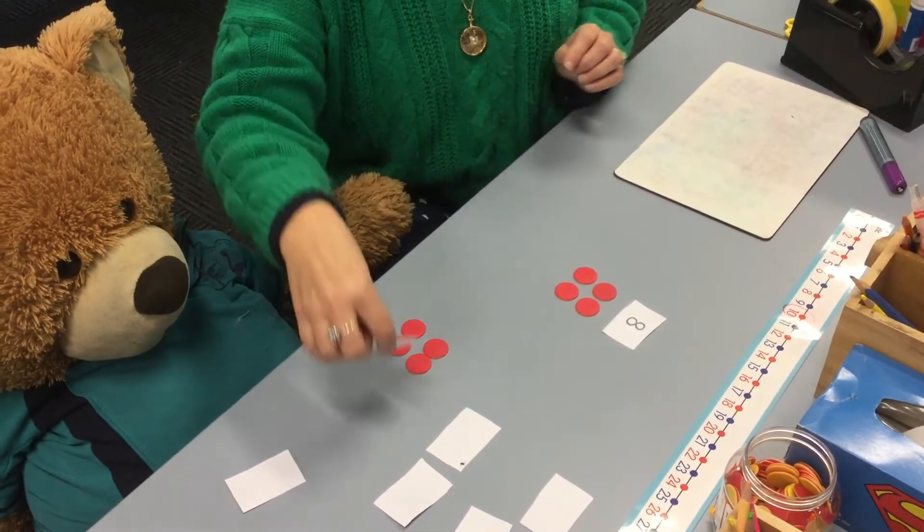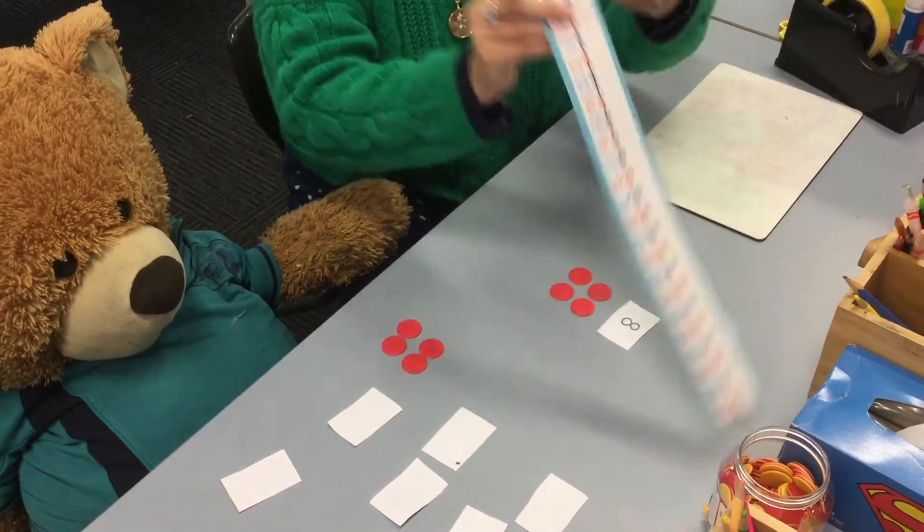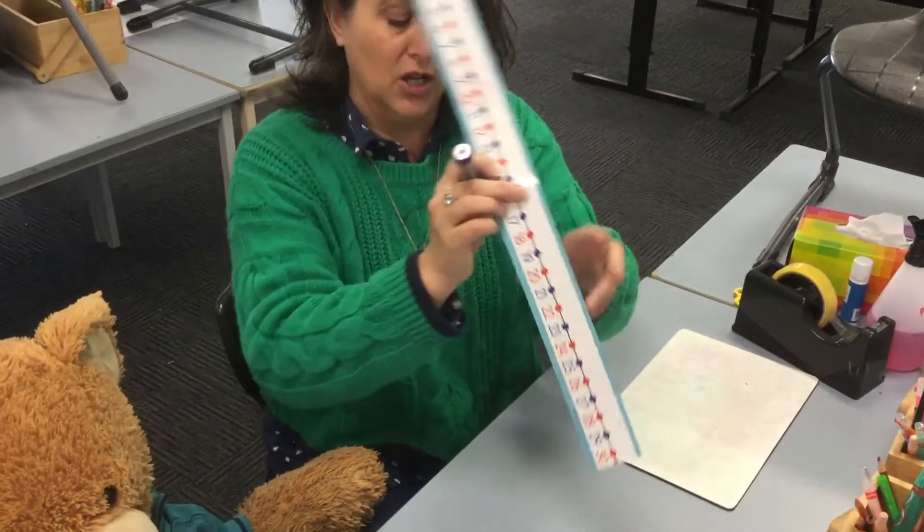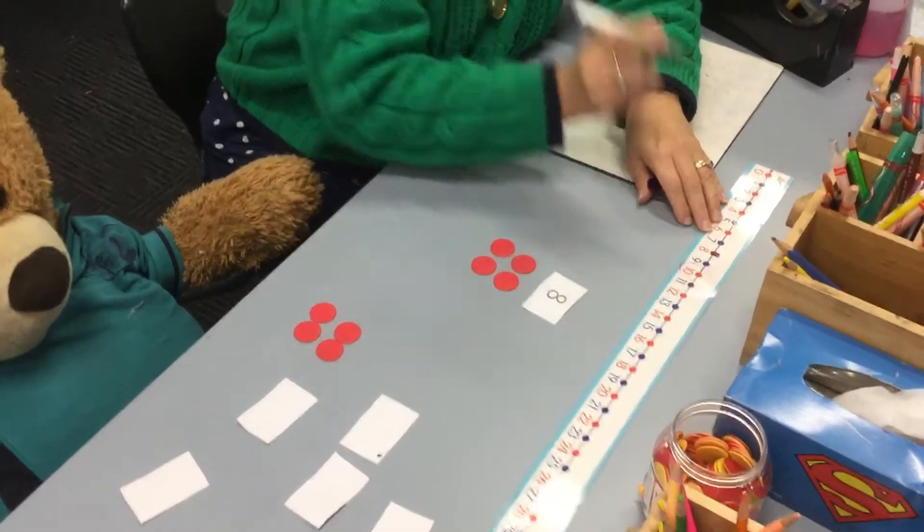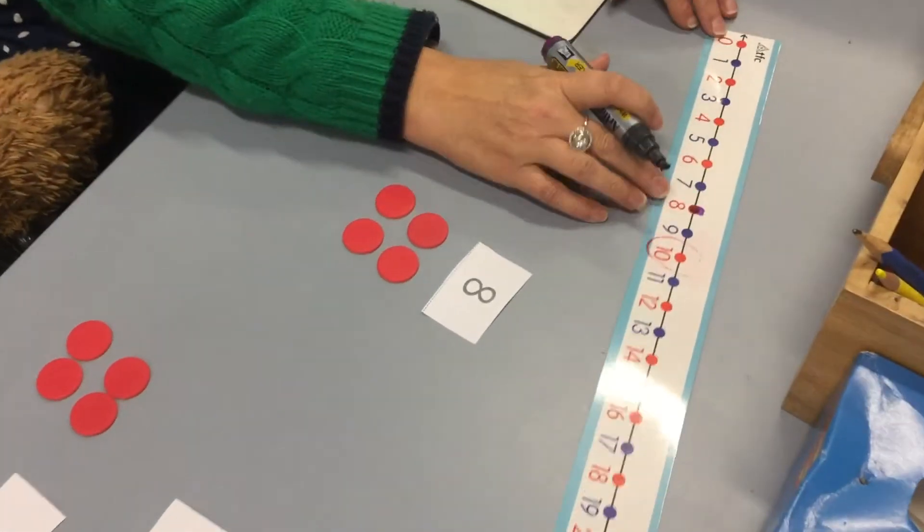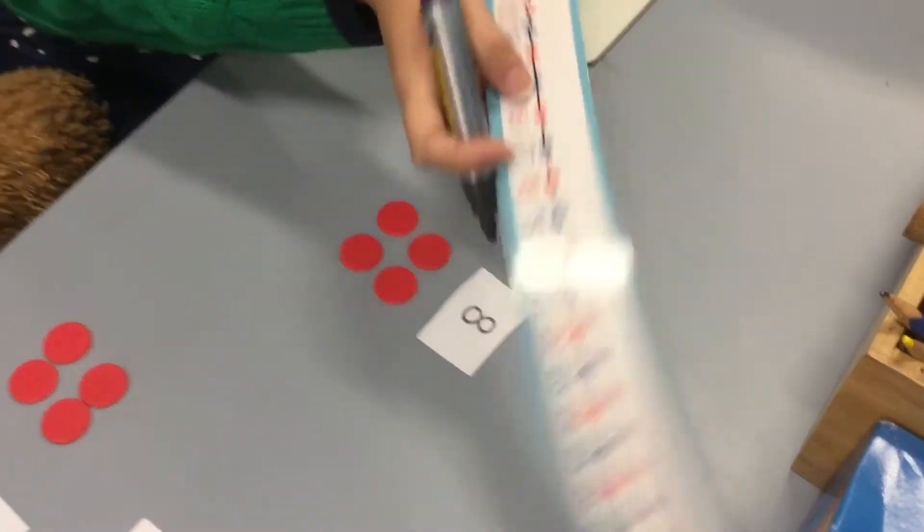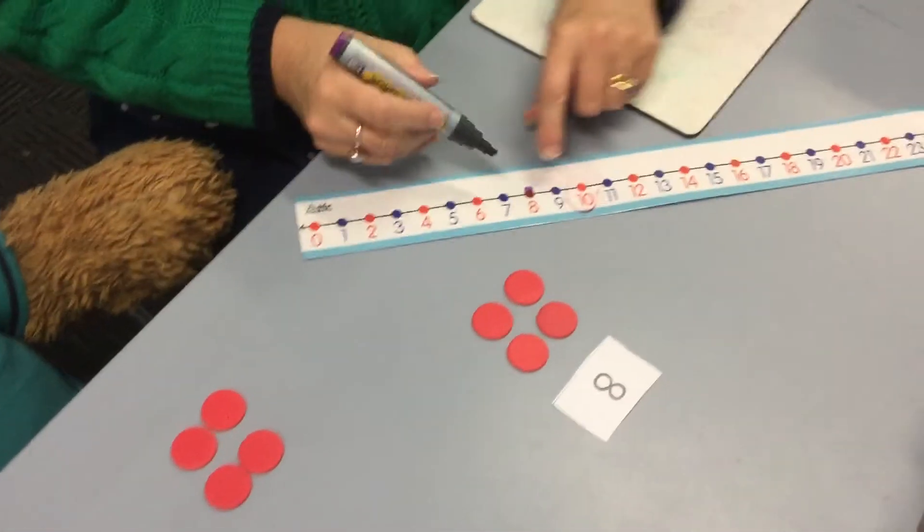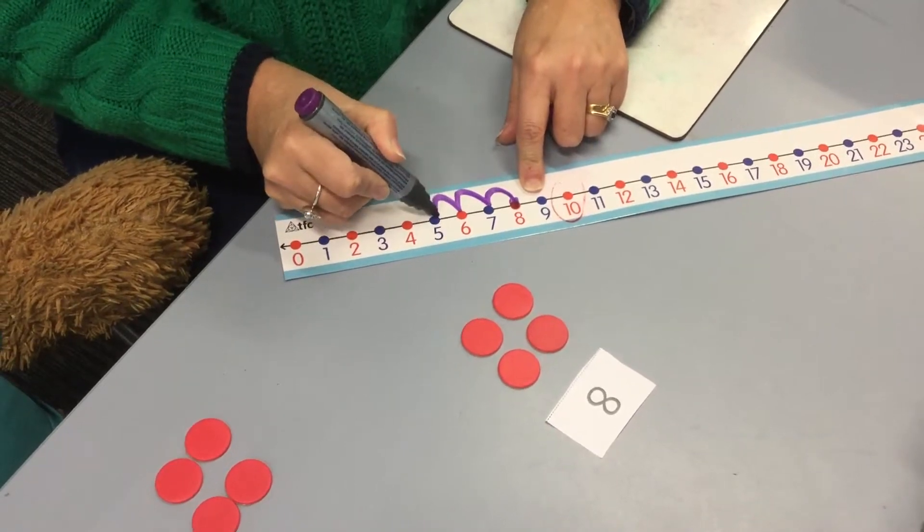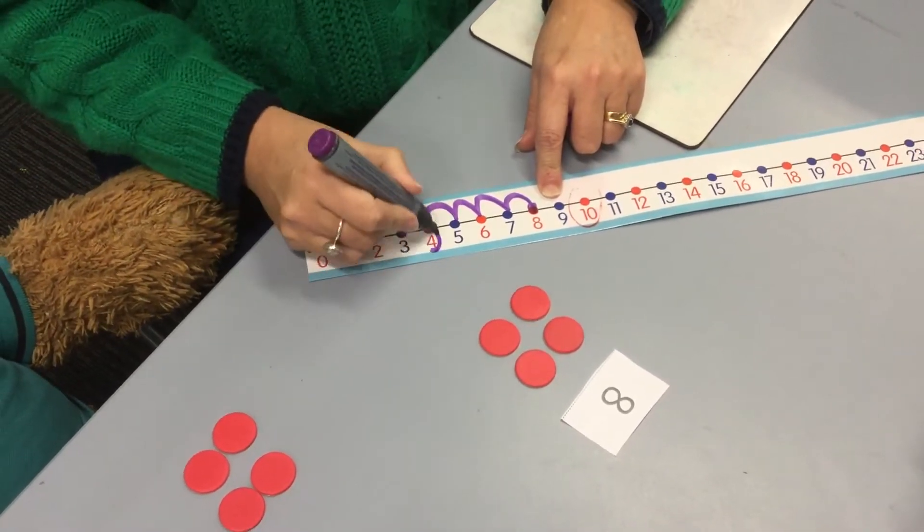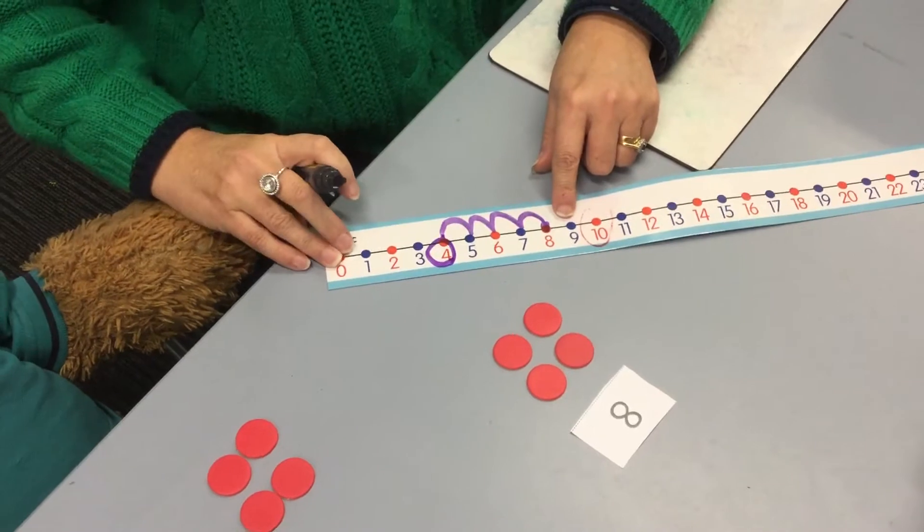Now here's another way of doing it. You don't have these at home but you do have number lines. You can also start at eight because that was the larger number. Do you want me to turn that around? We'll do it that way. And then you can go back four, so you can go one, two, three, four. So there's actually quite a few ways you can work out how to do this.